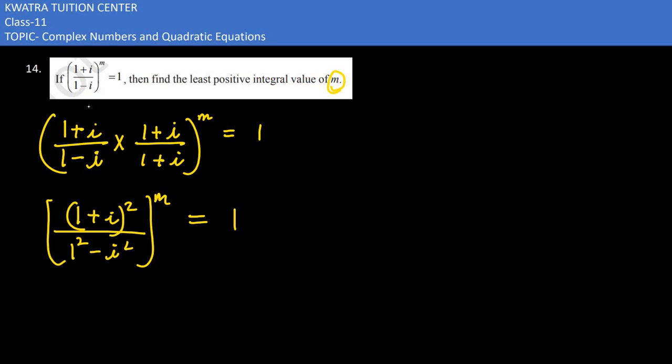Open (1+i) whole squared as 1 squared plus i squared plus 2i. In the denominator, 1 squared remains 1, minus i squared becomes minus 1. Power m equals 1.